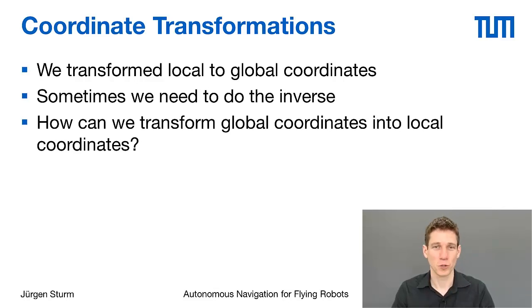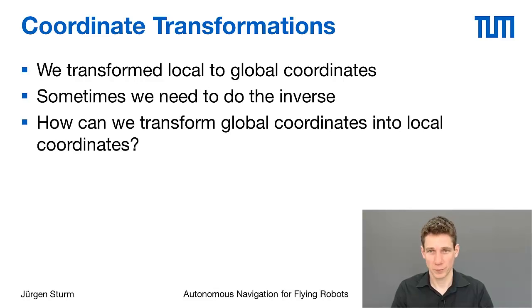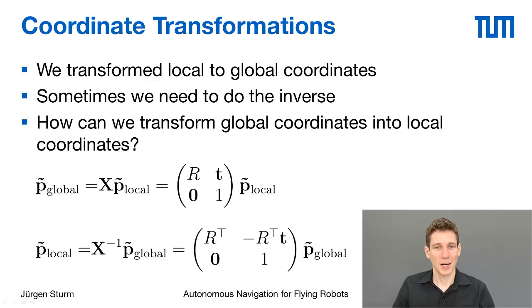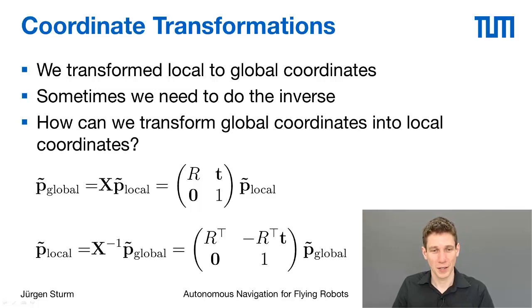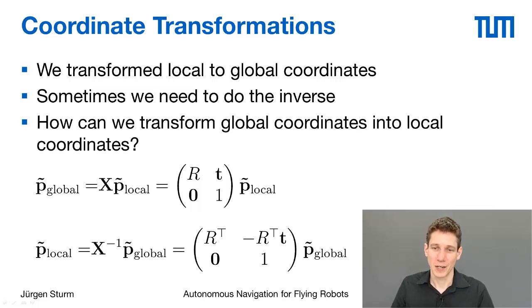Sometimes we need to do the inverse: we have global coordinates and want to know where they are in the local coordinate frame of the robot — that is, relative to the robot. To transform global coordinates to local coordinates, we can reverse the equation, which requires inverting the robot pose matrix.